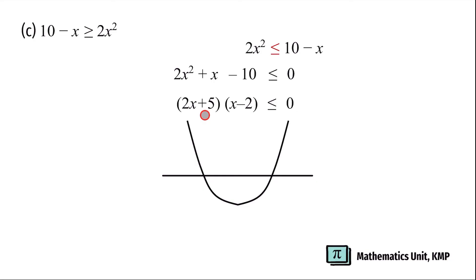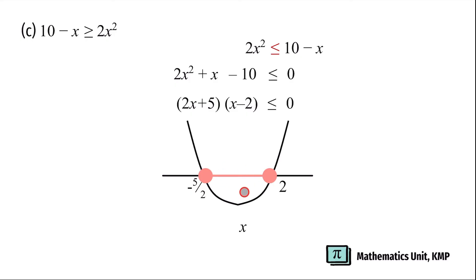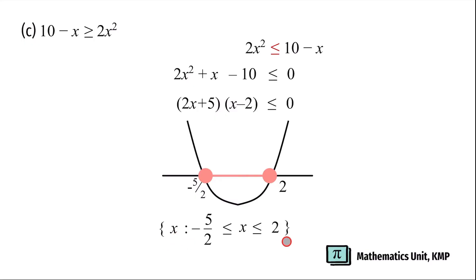For the linear factor 2x + 5, the x-intercept is -5/2. And for x - 2, the x-intercept is 2. Since y is less than or equals to 0, the solution will be in the middle of our graph. Since -5/2 is the smaller value it goes on the left-hand side and 2 on the right. We put the less than or equals to symbol on left and right of x. So we have x such that x ≥ -5/2 and x ≤ 2.